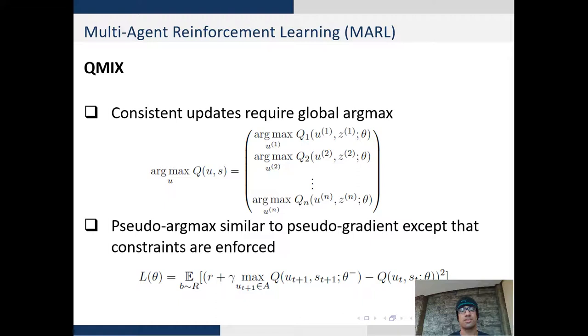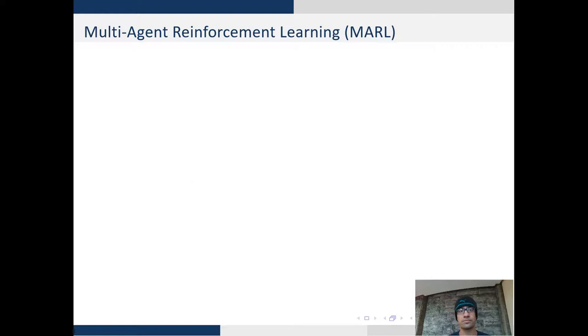Q-mix enforces these constraints by preserving a global argmax. This can be thought of as a pseudo argmax which is quite similar to the pseudo gradient which we saw in lectures except that the constraints are enforced manually. We incorporate this objective in the actual Q-mix cost function so that the agents can optimize this in the long run.